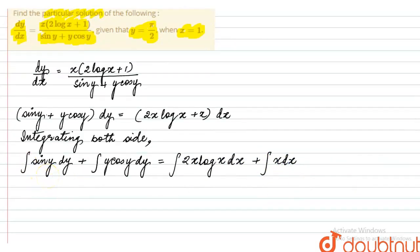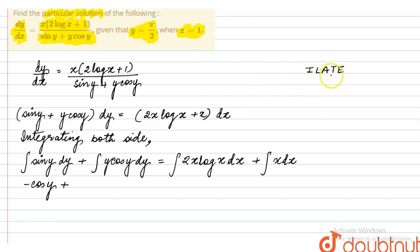The integration of sin y becomes minus cos y. For the term y cos y, we will apply the ILATE rule. In ILATE rule, algebraic comes before trigonometric, so the first function will be y and the second function will be cos y.